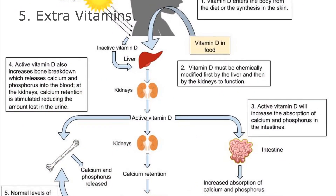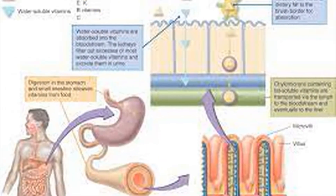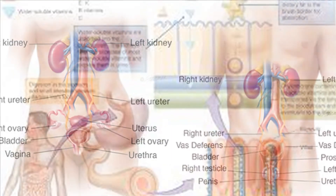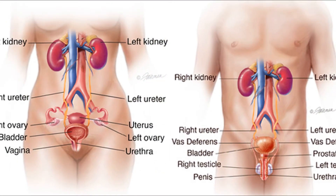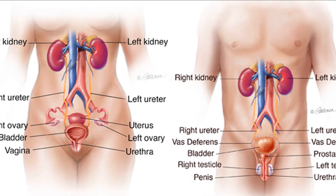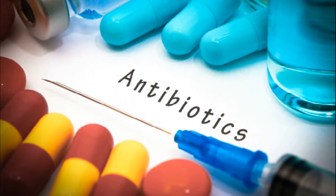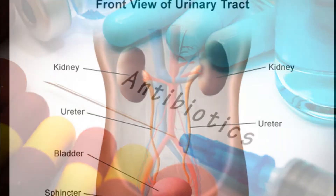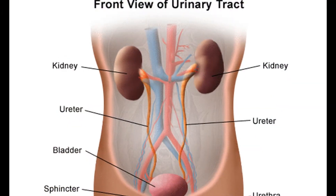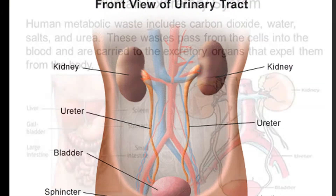Extra vitamins: The vitamins absorbed from food may be in excess. The fat-soluble ones are stored in the body to some extent, but the extra water-soluble ones such as vitamin B and C are passed out in urine. Similarly, certain medicines including antibiotics, if taken in extra quantity, are passed out along with urine.